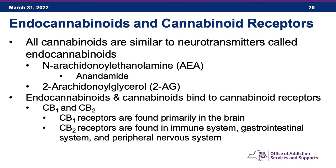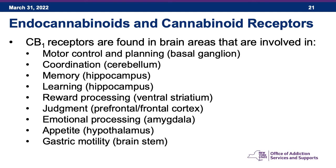The cannabinoid receptors are called CB1 and CB2. CB1 receptors are primarily found in the brain; CB2 receptors are found in the immune system, gastrointestinal system, and peripheral nervous system. THC has a high affinity for CB1 receptors; CBD has a lower affinity. CB1 receptors are involved in motor control and planning (basal ganglia), coordination (cerebellum), memory and learning (hippocampus), reward processing (ventral striatum), judgment (prefrontal and frontal cortex), emotional processing (amygdala), appetite (hypothalamus), and gastric motility (brain stem).